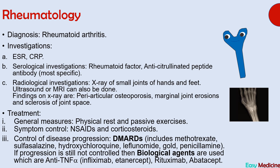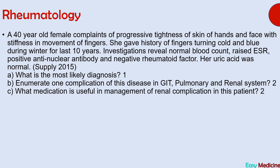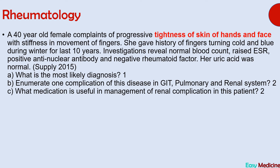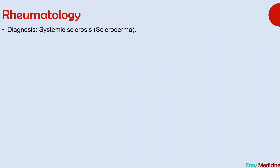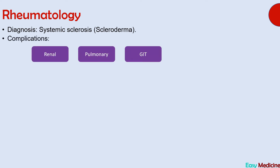The blue box shows the page number from Davidson's book. The next question's diagnosis is systemic sclerosis. An important point leading to this diagnosis is tightness of skin of hands and face, which is a cardinal symptom of systemic sclerosis. Complications include: renal — systemic hypertension; pulmonary — pulmonary hypertension leading to right heart enlargement and right heart failure; GIT — gastroesophageal reflux disease.